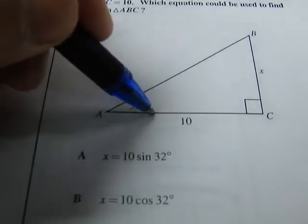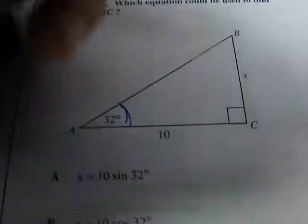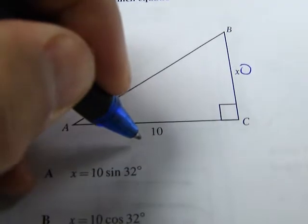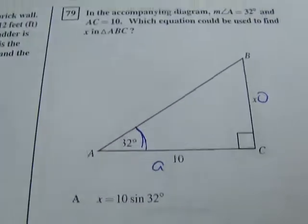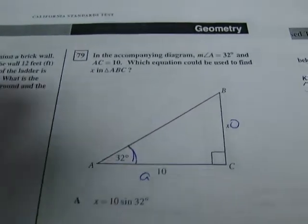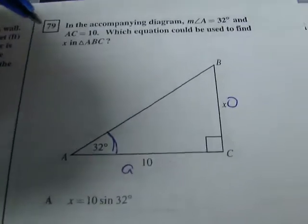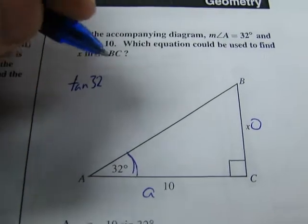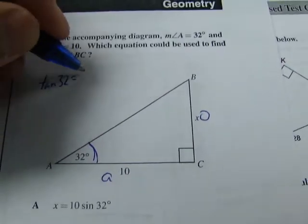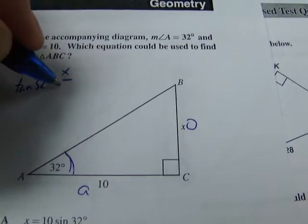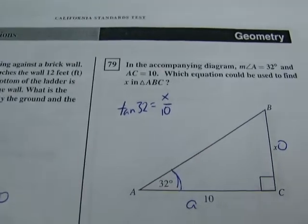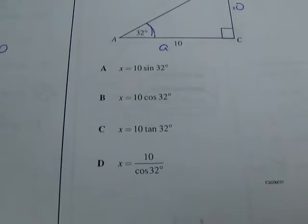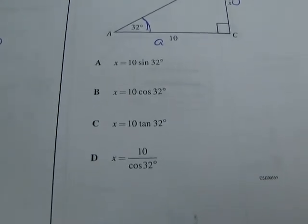This is our angle of record and x here is our opposite and 10 is our adjacent. So what we've got is an opposite adjacent problem or tangent problem. So the first thing I'm going to do is write this problem. Tangent of 32 equals x over 10. Let's look for that. The problem is we don't exactly see that anywhere.